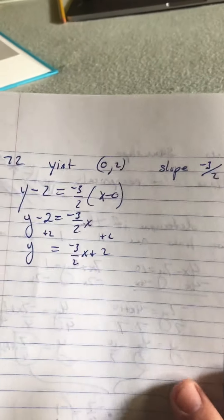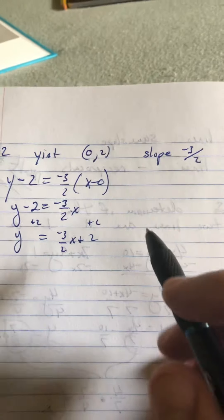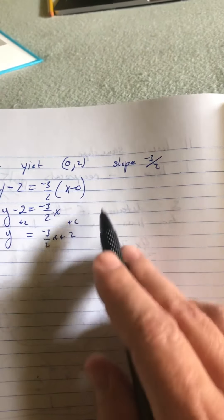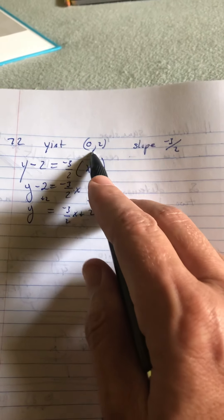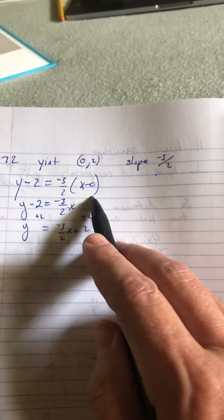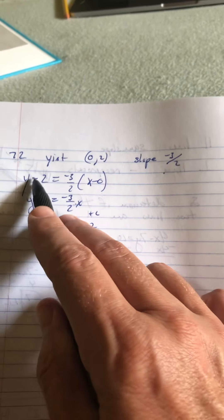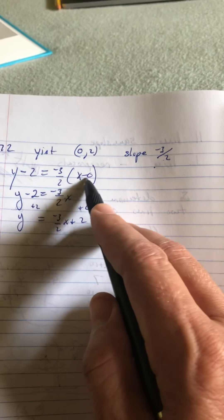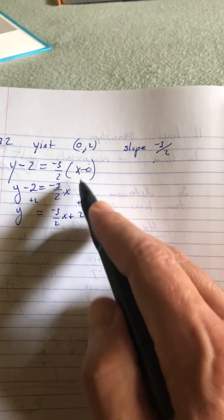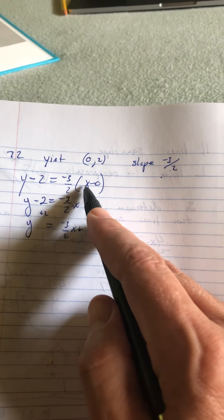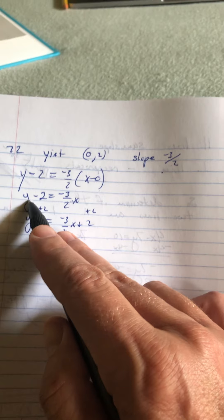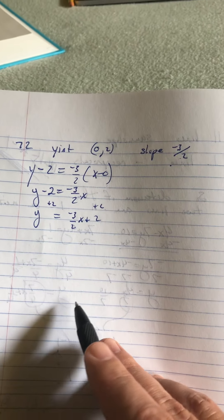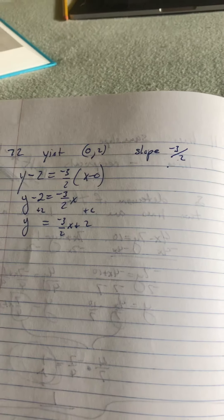All right. Now, another problem, number 72 from the book. They give you the y-intercept of 0, 2, and they tell you the slope is negative 3 over 2, and then find the equation of the line. Well, we have a point, and we have a slope. Let's use the point-slope form of a line. That goes y minus y1, there's our y1, is equal to our slope, that's our slope, times x minus x1. There's our point. Negative 3 over 2 times x is right there. The 0, it falls off. We're going to add 2 on both sides, so we end up with y equals negative 3 over 2x plus 2. Okay. Hopefully, that helps.